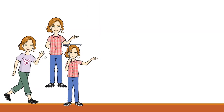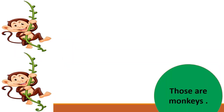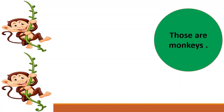What will we say here? 'Those are girls.' Woh sab ladkiyan hain — those are girls. And see the distance here too: those are monkeys.